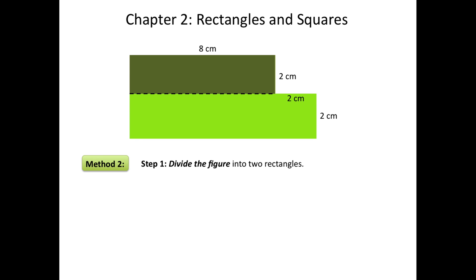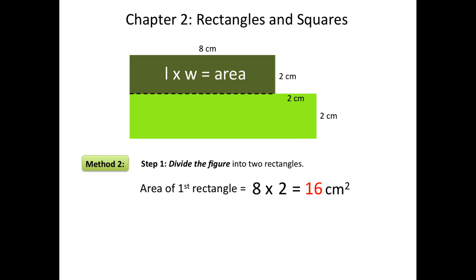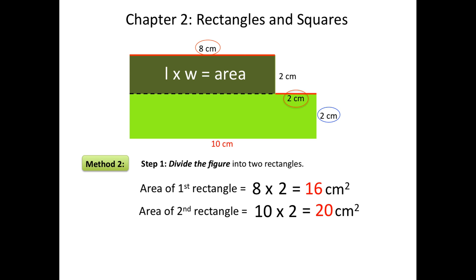Once again, we know to multiply the length times the width to find the area of a rectangle. We're given the length and the width of the first rectangle. The area of the dark green rectangle is 8 times 2, or 16 centimeters squared. Next, we have to find the area of the light green rectangle. The width is provided, as you can see here circled in blue. However, the length of this longer rectangle is currently unknown. We need to look at the information provided to find the length. You can see that the two parts highlighted in red here make up the length of the opposite side. The length of the larger rectangle is 8 plus 2, or 10 centimeters, and the area of the light green rectangle is then 10 times 2, or 20 centimeters squared.